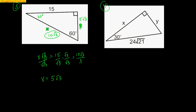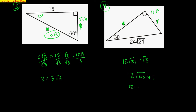In example 4, the hypotenuse is 24√21 — a very weird one. The short leg is always half the hypotenuse, so half of 24√21 is 12√21. The long leg is always the short leg times √3, so 12√21 × √3 = 12√63. Since 63 = 9 × 7, the √9 comes out as 3, giving 12 × 3√7 = 36√7. So the long leg is 36√7. Be careful with these unusual ones.